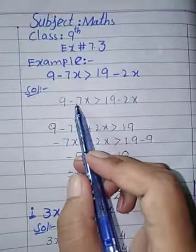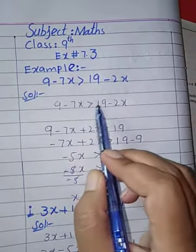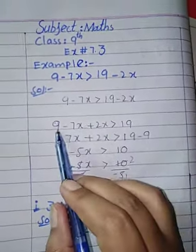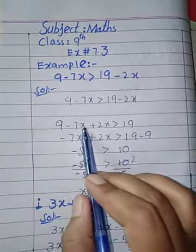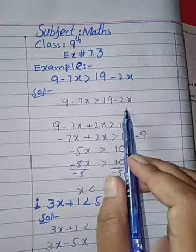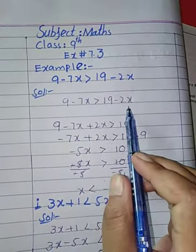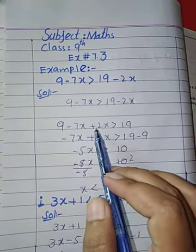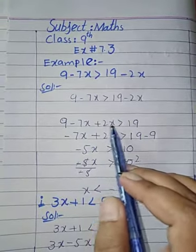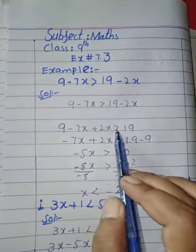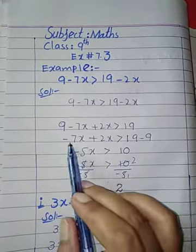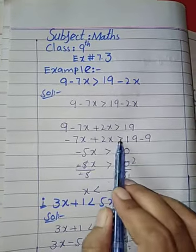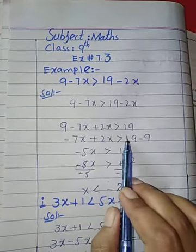9 minus 7x greater than 19 minus 2x. When minus 2x comes to this side of the inequality the sign changes to plus, so we write plus 2x greater than 19. Now minus 7x plus 2x greater than 19 minus 9.